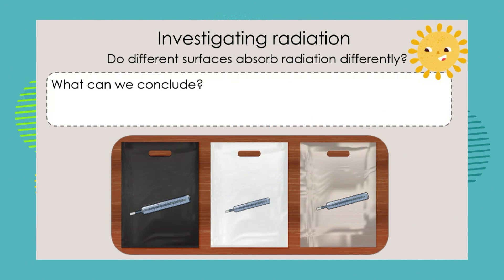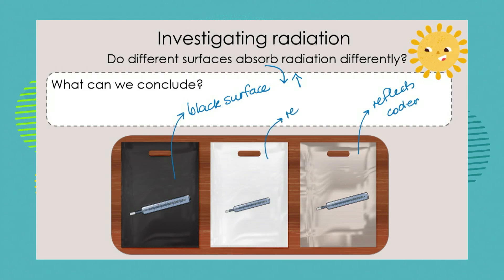The temperature inside the black bag is the highest. The temperature inside the foil bag is the lowest. The white bag's temperature is in between the two — less than the black but a little more than the foil. What can we conclude? A black surface absorbs more radiation. A foil surface reflects the radiation so it becomes cooler. White also reflects radiation and becomes cooler than the black, but not as cool as the foil.